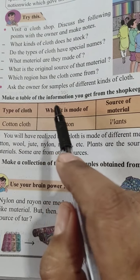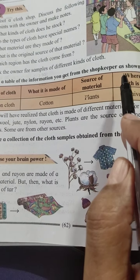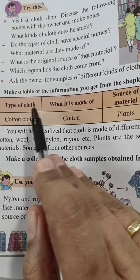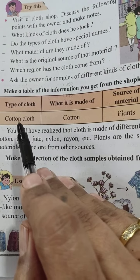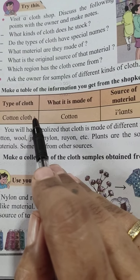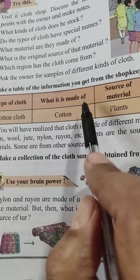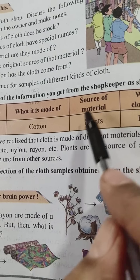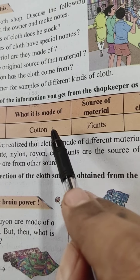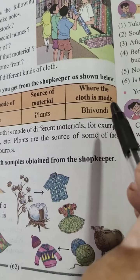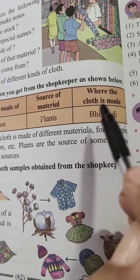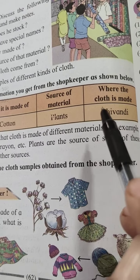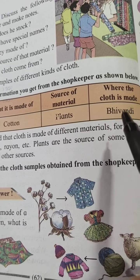Make a table of information you get from the shopkeeper as shown below. The type of cloth, the material it is made of, the source of that material — for example, cotton comes from a plant — and where the cloth is made.